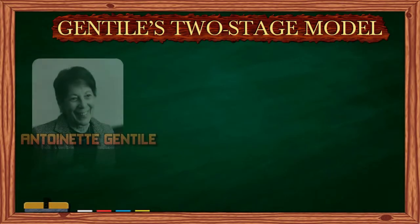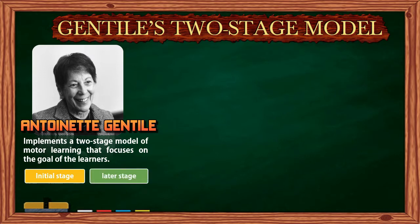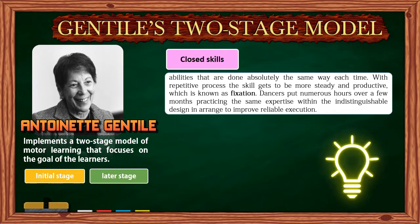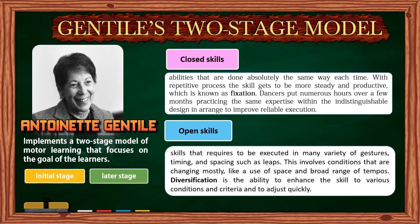Gentile's two-stage model. Antoinette Gentile, a psychology professor, implements a two-stage model of motor learning focusing on the goals of learners. The two stages are the initial stage and the later stages. Closed skills are abilities performed the same way each time; through repetitive practice the skill becomes more steady and productive, known as fixation. Dancers put numerous hours practicing the same skill within an identical design to improve reliable execution. Open skills require execution in many varieties of gestures, timing, and spacing, such as leaps, involving changing conditions like use of space and a broad range of tempos. Diversification is the ability to adapt the skill to various conditions and adjust quickly.